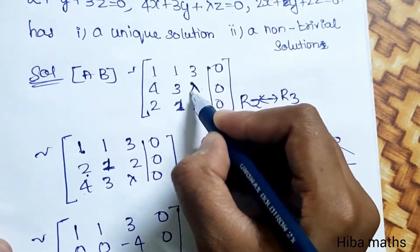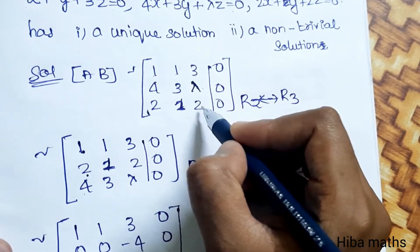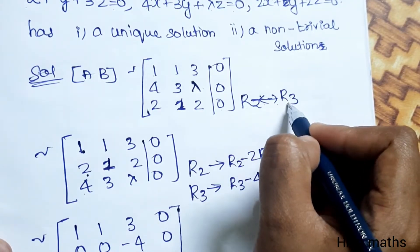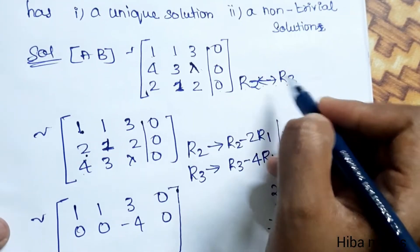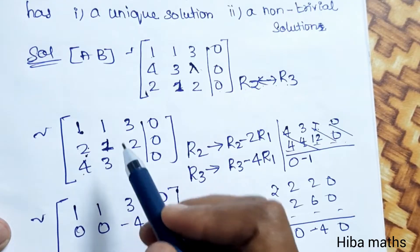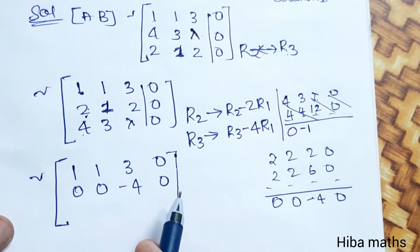Since lambda is in the second row, we will interchange R2 and R3 to simplify. So R2 becomes R3 and R3 becomes R2.